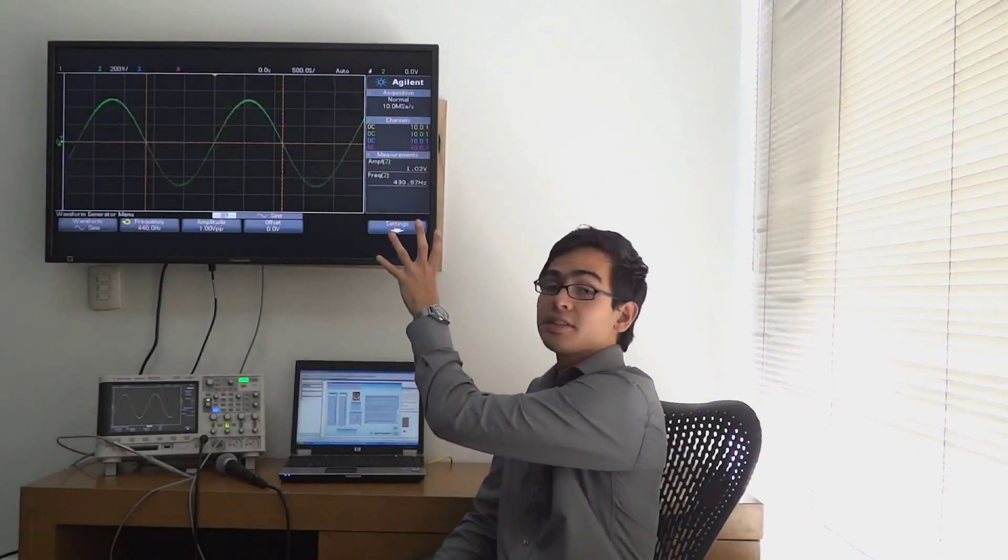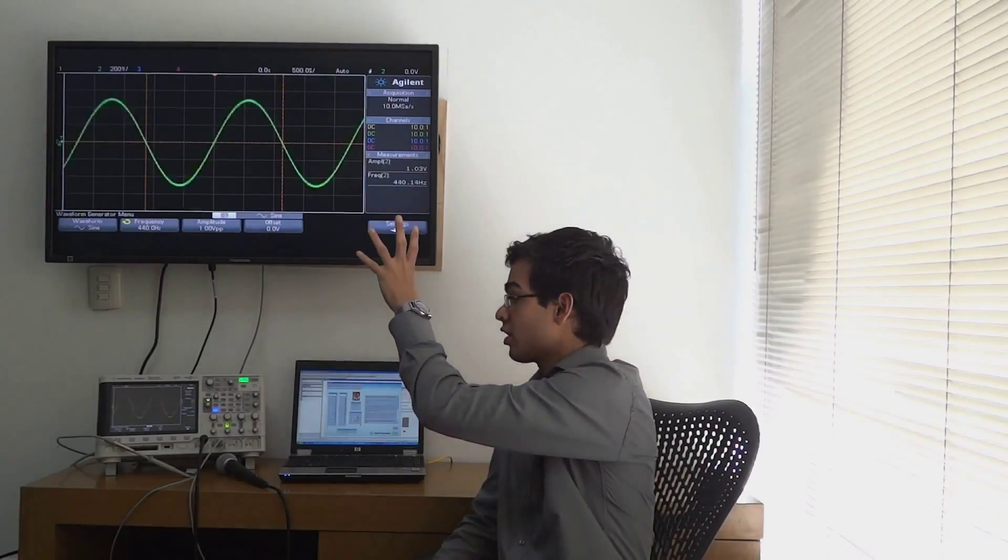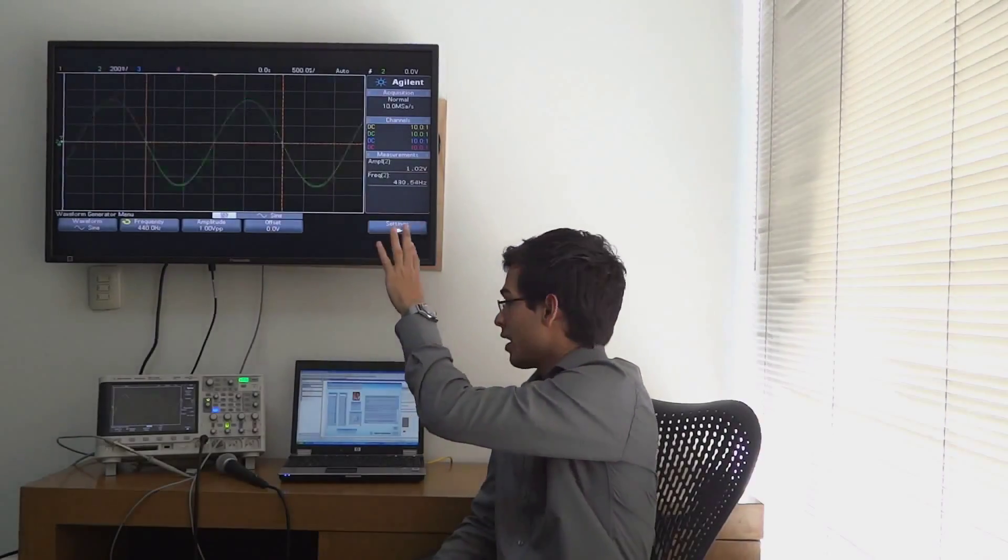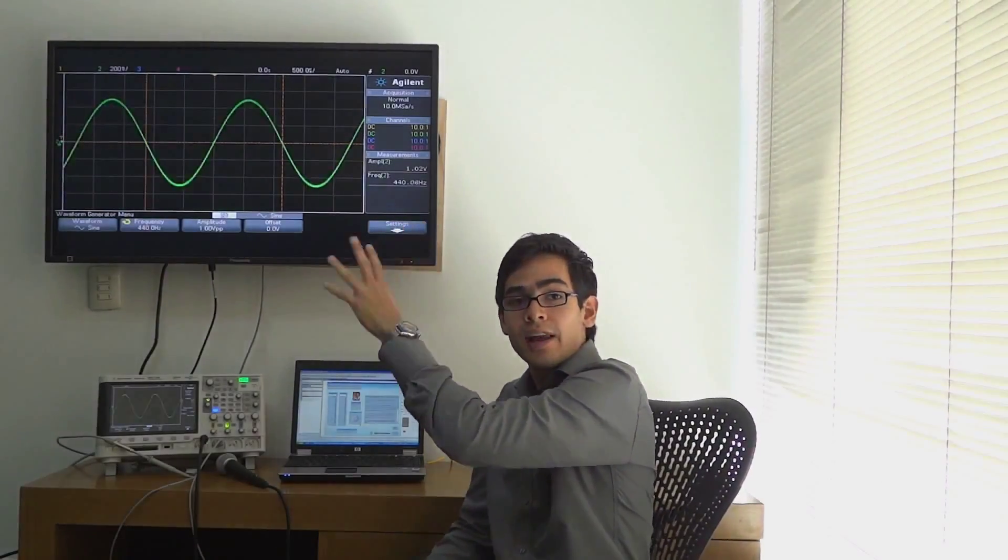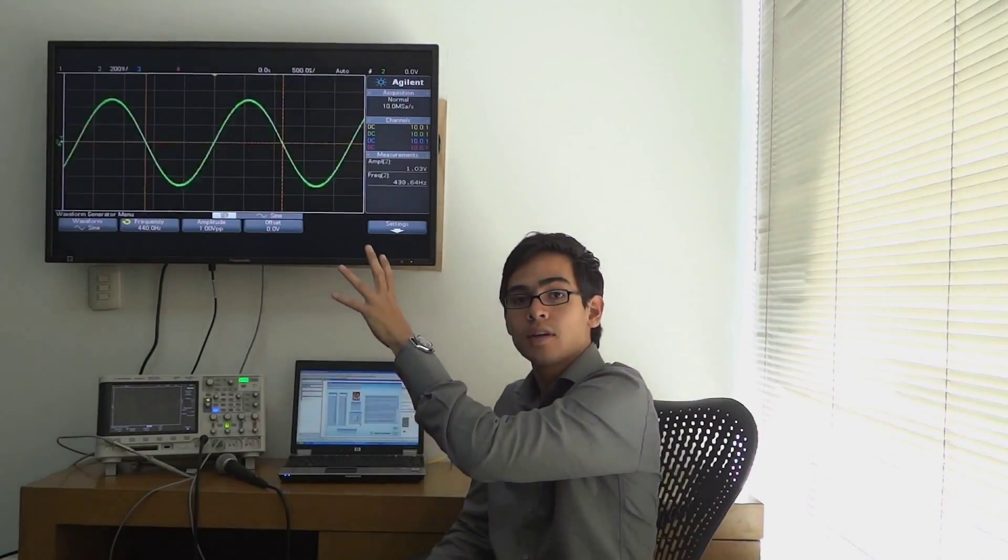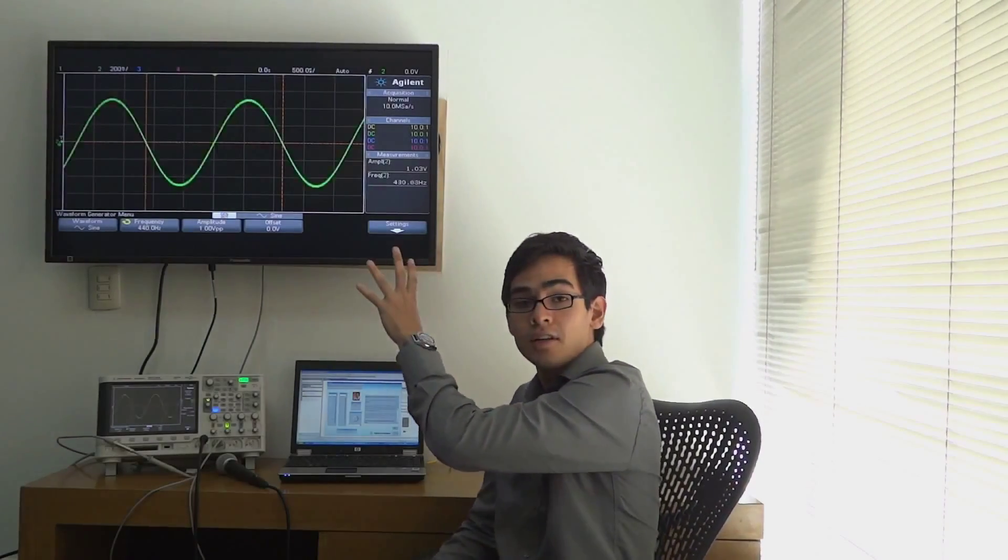The signal from the oscilloscope has created sound. Over here we can see the signal that is coming from the generator. As I said before, LXI allows to control and change the parameters of the signal in real time.